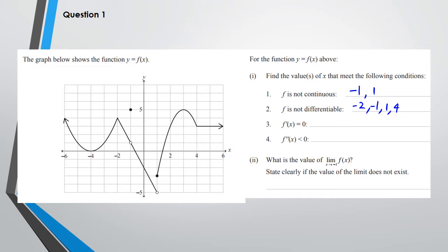The next part asks where f'(x) = 0, meaning where the gradient equals zero. The first point is at x = -4, then at x = 3. Also, this straight line here — the gradient is also equal to zero there. So the points we're looking for are x = -4, x = 3, and when x is greater than 4.